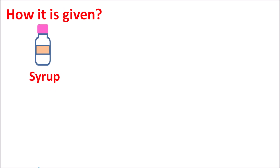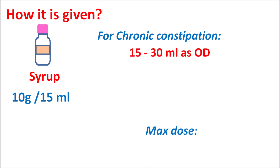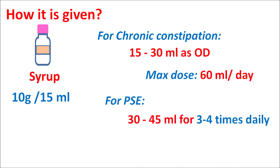This drug is available as a syrup at a strength of 10 grams per 15 ml, so each 15 ml of syrup contains 10 grams of lactulose. The dose depends on the clinical indication. For treatment of chronic constipation, lactulose is given at 15 to 30 ml once daily, with a maximum dose of 60 ml per day. For management of portal systemic encephalopathy, this drug is given at a higher dose — 30 to 45 ml three to four times daily — to reduce serum ammonia levels. At such high doses, this drug may produce diarrhea and can impact electrolyte levels, so care should be taken.